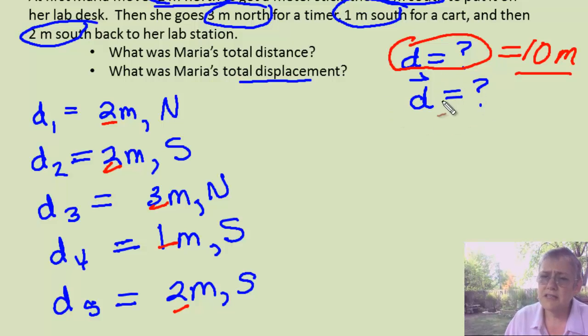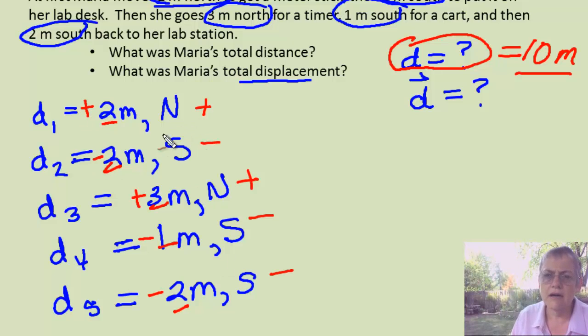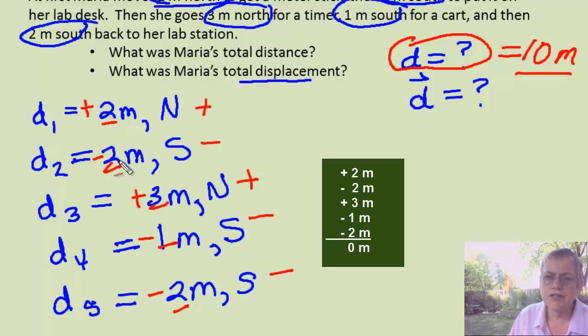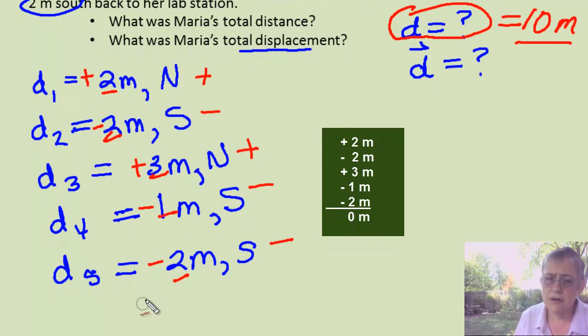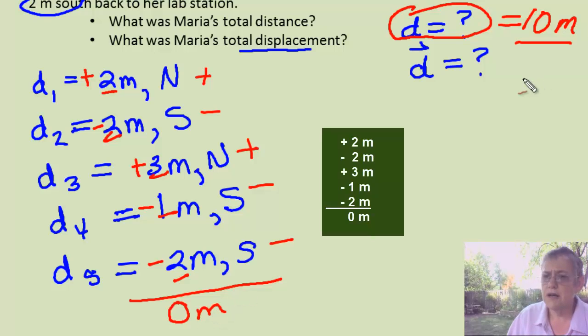Now displacement. Displacement includes direction. There's a couple of ways to do that. We can say that north is positive and south is negative. So I can relist these things as positive and negative. In that case, I could probably put them over here by the twos, plus 2. Now I can add all those together. So plus 2, minus 2. That's 0. 0 plus 3 is 3. 3 minus 1 is 2. 2 minus 2 gives me 0. So my total displacement is 0 meters. And put that over here.